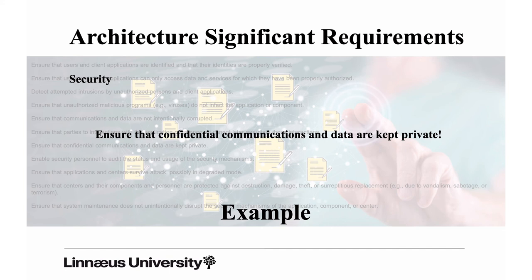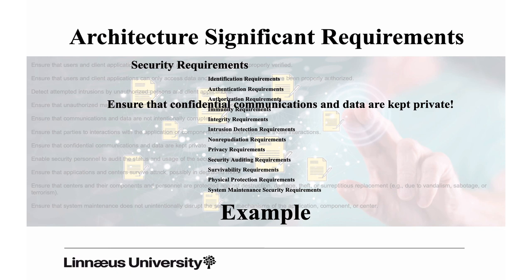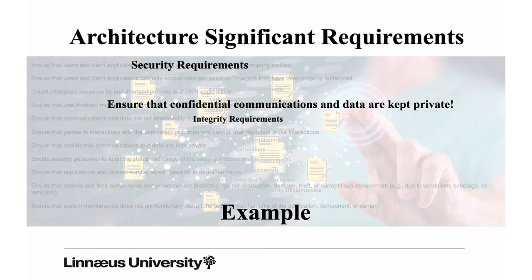Each of these statements belongs to some class of security requirements — identification, authentication, authorization, immunity, and integrity. The confidential communications and data requirement falls under integrity. What we've done here is used a catalog of security requirements, scanned that list, and found some requirements that suit our system. Based on this knowledge, we identified some possible requirements that we can then analyze and specify in more detail.